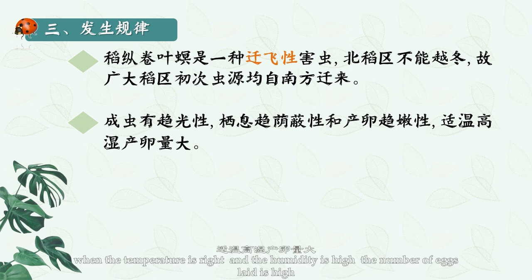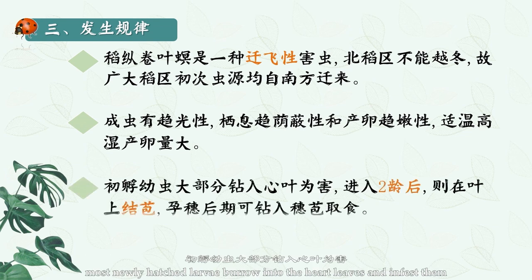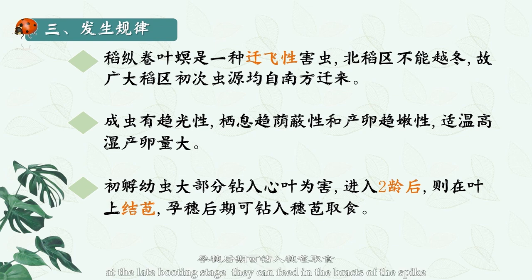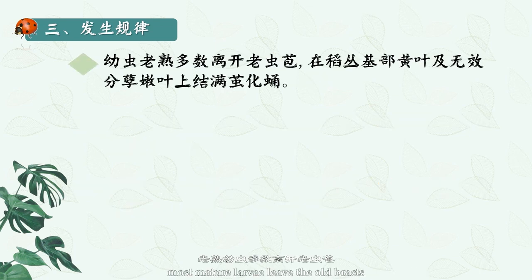When the temperature is right and the humidity is high, the number of eggs laid is high. Most newly hatched larvae burrow into the heart leaves and infest them. After reaching the second instar, they roll the leaves into bracts and feed. At the late booting stage they can feed in the bracts of the spike.